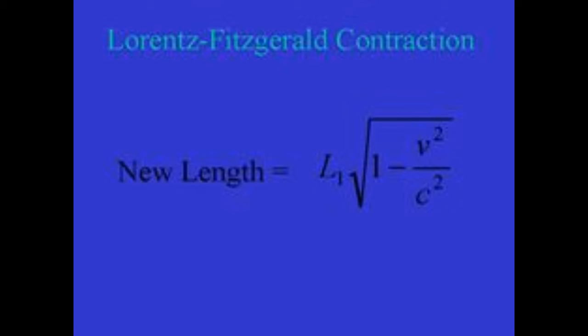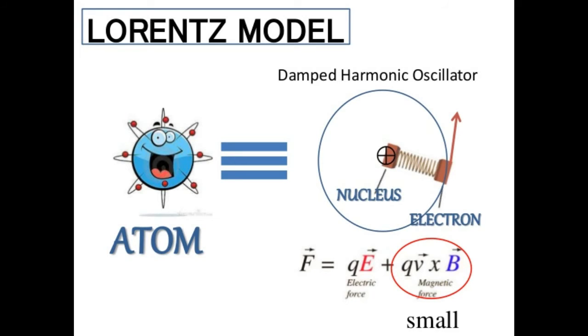Einstein was not the first to assert the impossibility of detecting the velocity of the earth through the ether. No! This was done by J.H. Poincare and H.A. Lorentz.